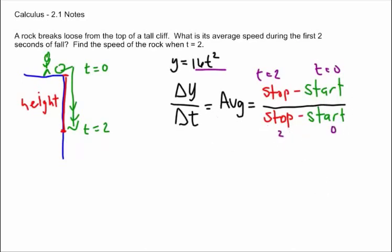And so when we set this bad boy up, what we're going to end up with is 16 times 2 squared minus 16 times 0. On the bottom, we're going to have 2 seconds minus 0 seconds.